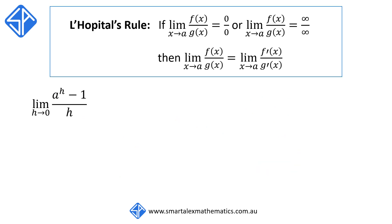In order to evaluate this limit, we're going to need to use L'Hôpital's rule. L'Hôpital's rule states that if the limit as x approaches a of f(x) over g(x) is indeterminate — that is, it is 0 over 0 or infinity over infinity — then we can evaluate this limit by working out the limit as x approaches a of f'(x) over g'(x).